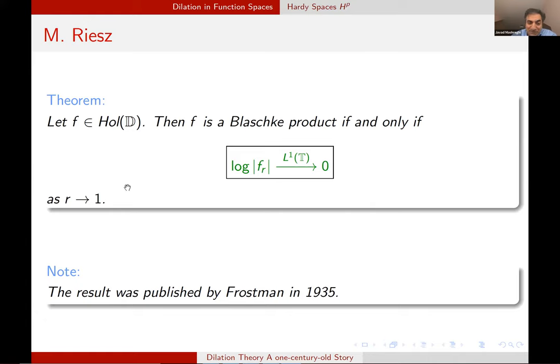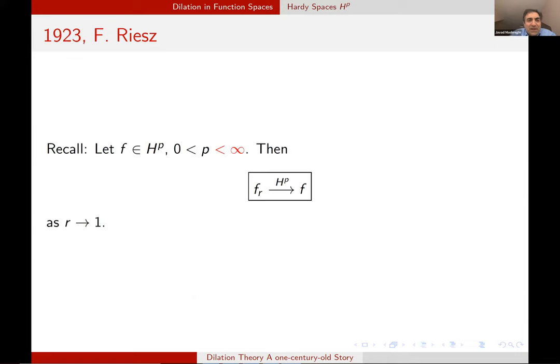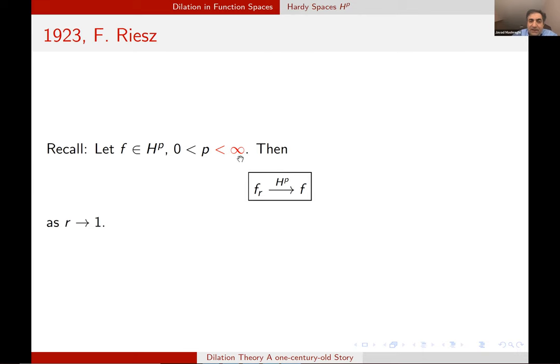I don't know why he did not publish the result, but a while later it was published by Otto Frostman. Back to F. Riesz theorem, I highlight the fact that I didn't put identity here. It works for p strictly less than infinity. Of course, it doesn't work for all function in H infinity because these guys are continuous. And if they uniformly converge to something, that something should be continuous too on the closed unit disk. And there are examples like infinite Blaschke product, singular inner function or any F which is discontinuous on T for which this doesn't work.